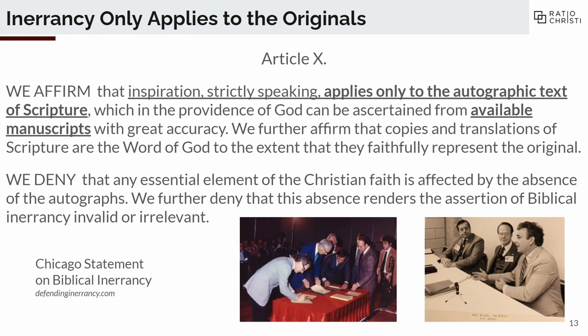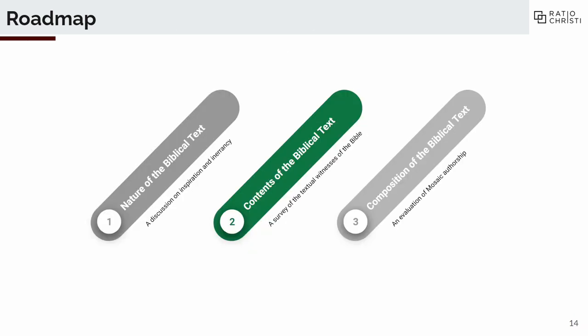One very important clarification about inerrancy: it only applies to the original manuscripts. From Article 10 of the Chicago Statement: they affirm that inspiration, strictly speaking, applies only to the autographic — that is, original — text of scripture, which in the providence of God can be ascertained from the available manuscripts. The original manuscripts that were written down in the past no longer exist; they've been lost to time. But we have copies, like this copy here. This leads to the next question: what are these available manuscripts by which we ascertain the original?